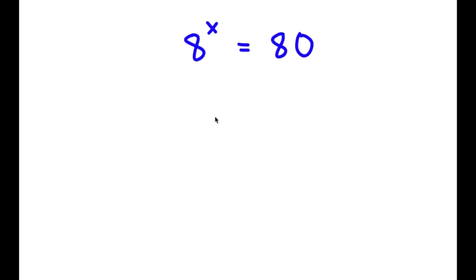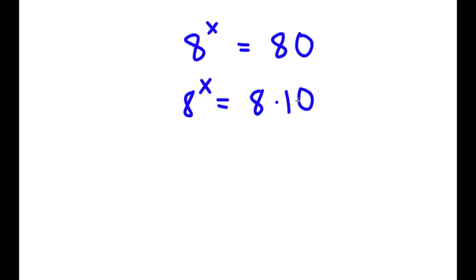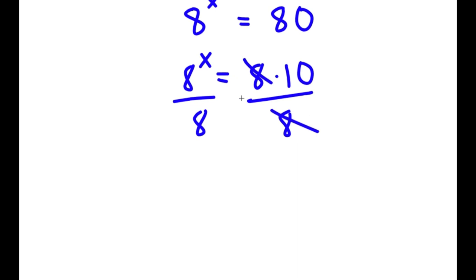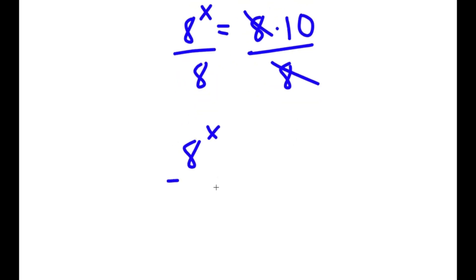In this problem, I have 8 to the power of x is equal to 80. To solve this, I'm going to first rewrite 80 as 8 times 10. So now I have 8 to the power of x is equal to 8 times 10. Then I'll divide both sides by 8, giving me 8 to the power of x over 8 is equal to 10.